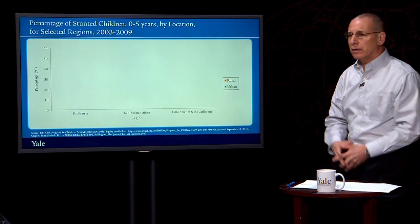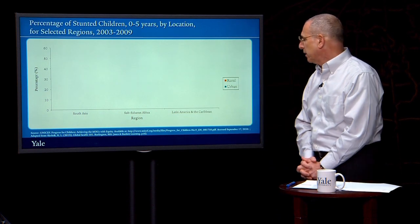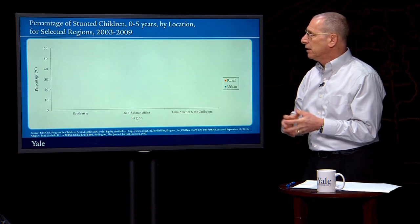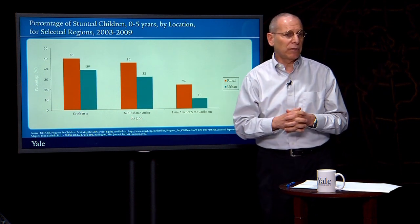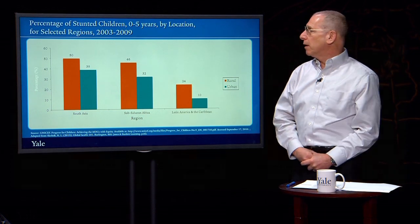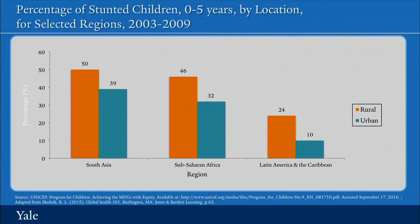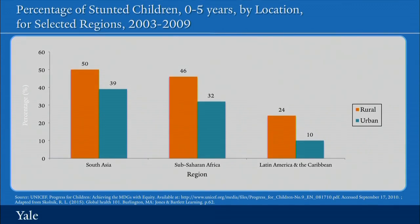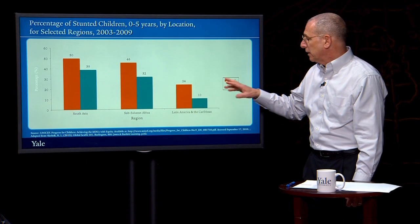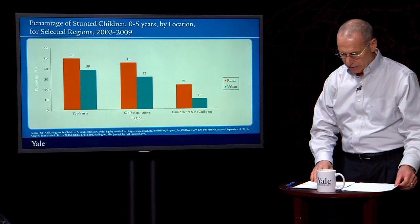We can also look at location as a factor linked to disparities. Here we look at the percentage of stunted children aged 0 to 5 by location for selected regions. Stunting refers to children who are much too short for their age. We would generally predict that urban children — even accounting for urban slums and urban poverty — will be better nourished than rural children, especially in low- and middle-income regions. Indeed, we find substantial differences, and in Latin America, likely also reflecting indigenous populations, rural children have rates of stunting more than twice as high as those in urban locations.